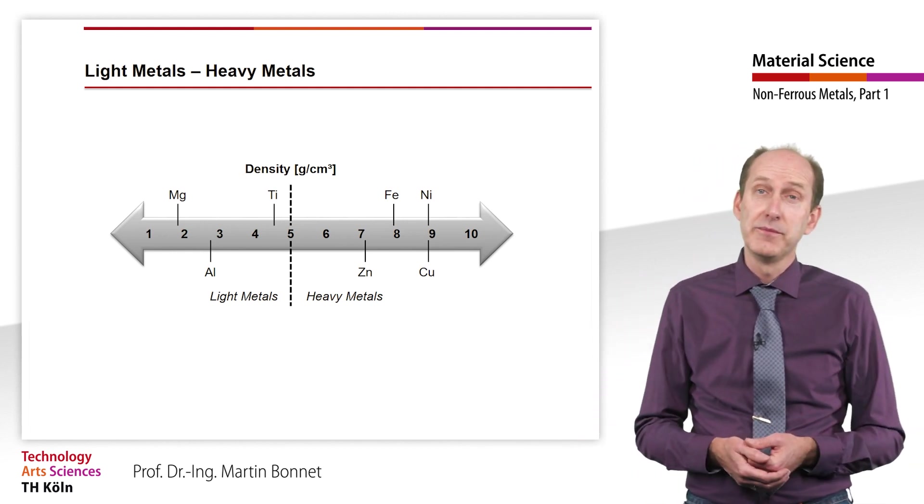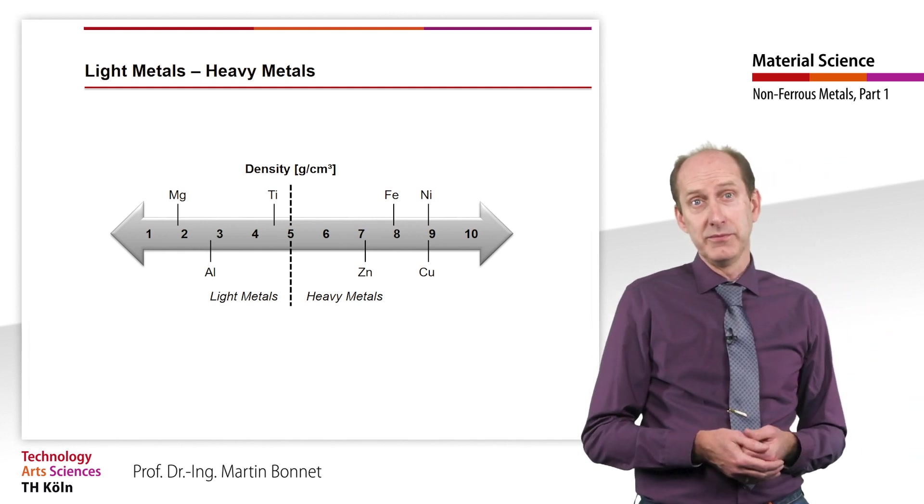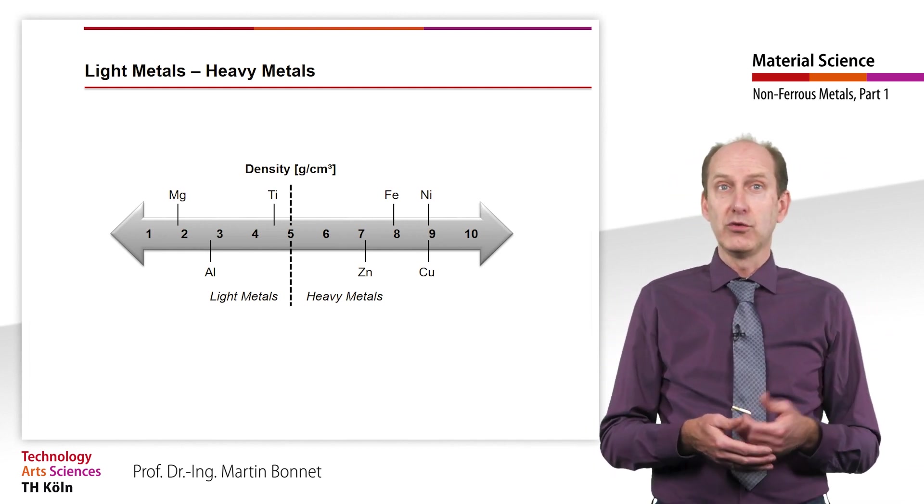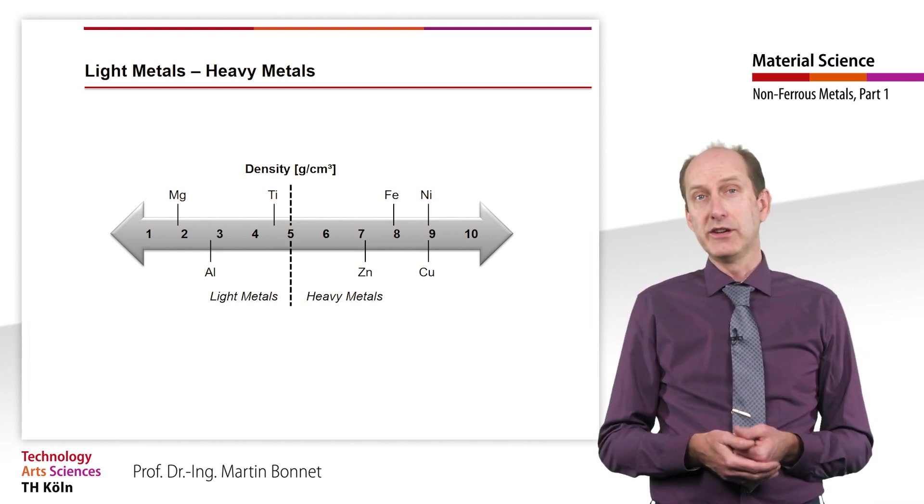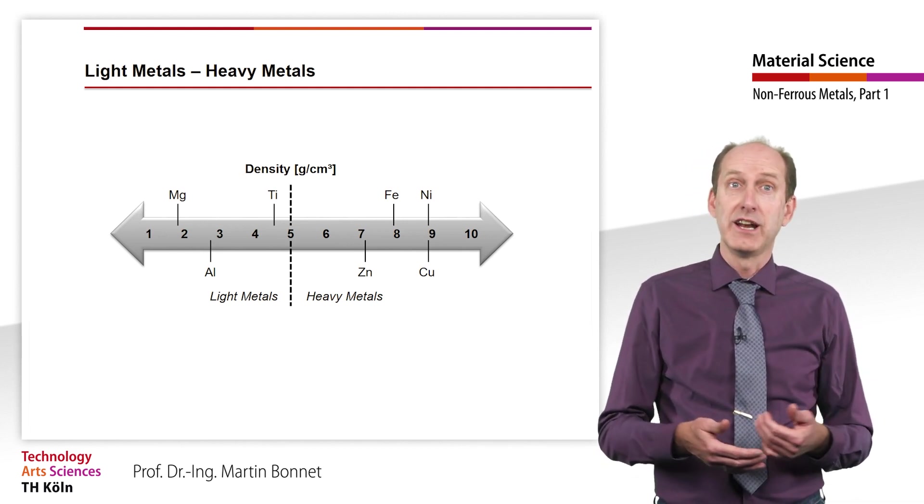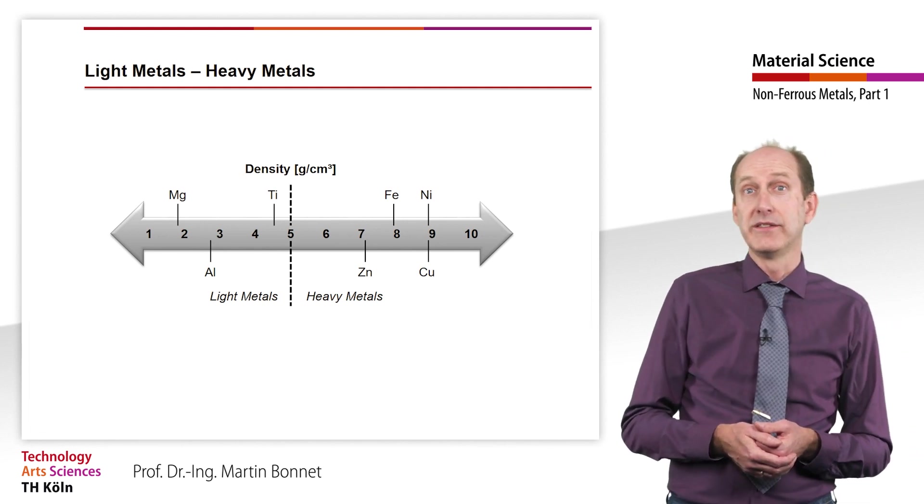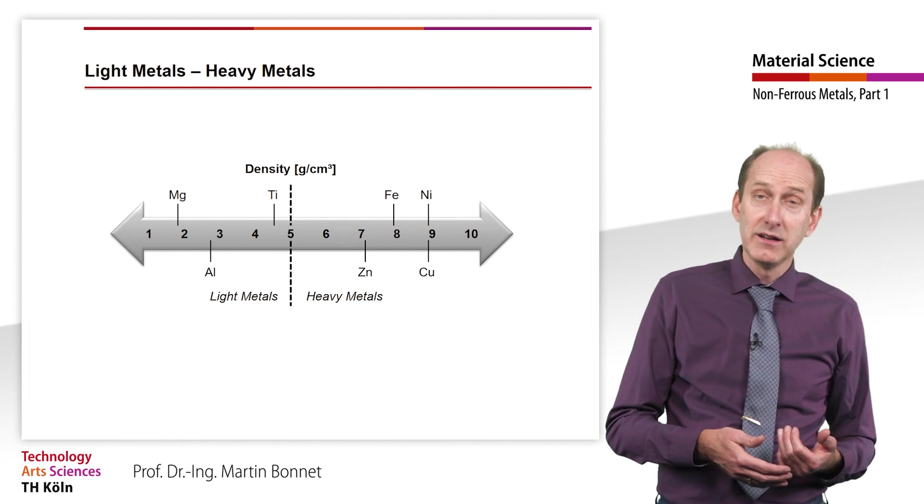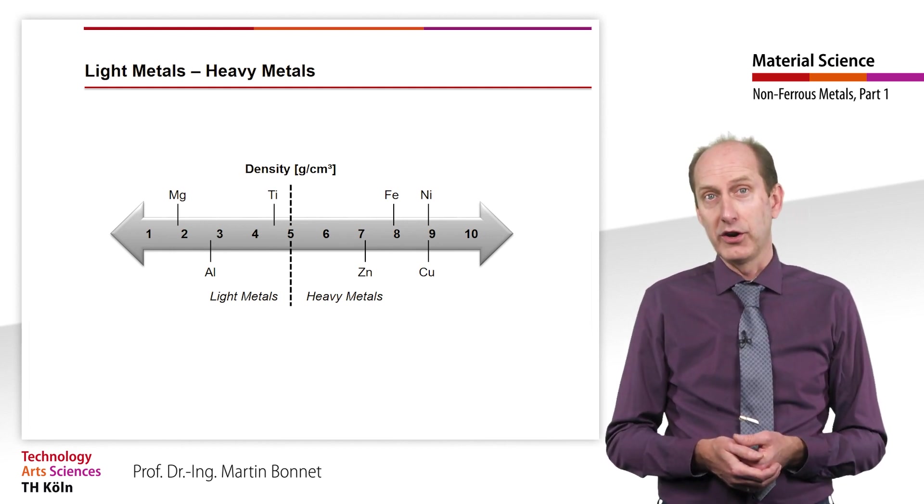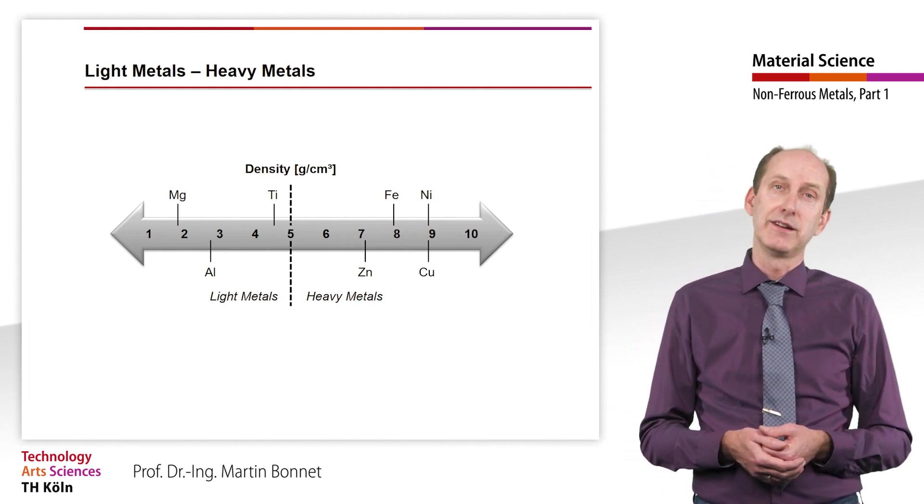In the technical sector, aluminum, magnesium, titanium and to a lesser extent beryllium and lithium are used in particular, as well as other elements as alloying elements in low concentrations. Among the heavy metals, nickel, zinc and copper and its alloys are of particular technical interest.